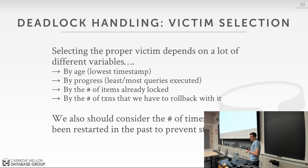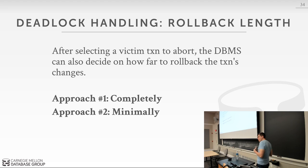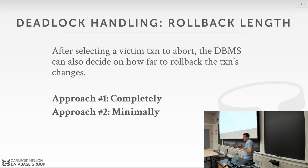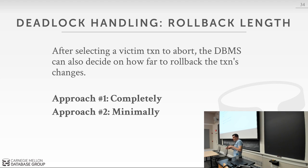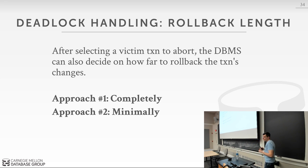The question of how far to roll back is also important. The obvious approach is to roll back all queries in the transaction. But sometimes you only need to roll back one query — just enough to release the lock causing the deadlock — then pause briefly and rerun that one query. This partial rollback may be sufficient to break the deadlock without discarding all the transaction's work.